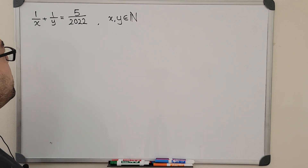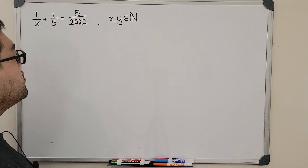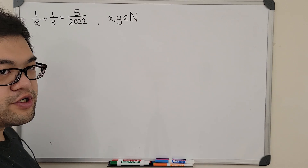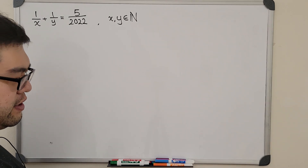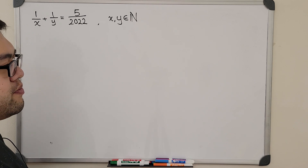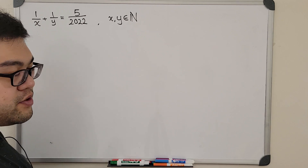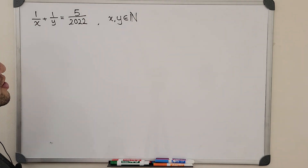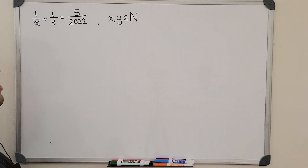As a number three problem, we don't assume x and y to be arbitrary real numbers — we limit them to natural numbers. When I say natural numbers, I do not include zero, but in this situation it doesn't really matter because if we assume x or y is zero, we'll end up with one over zero on the left-hand side, which is undefined.